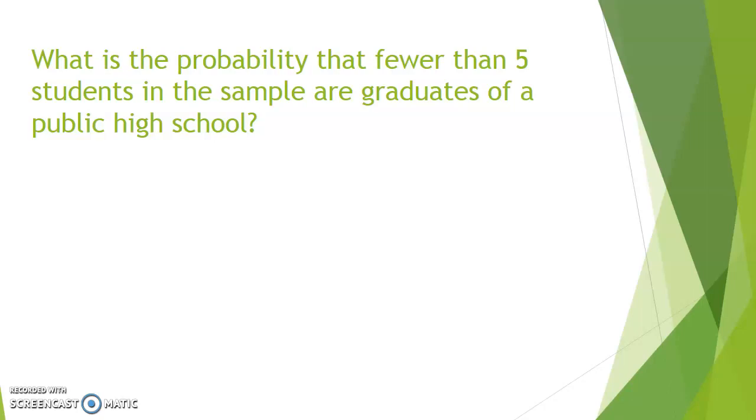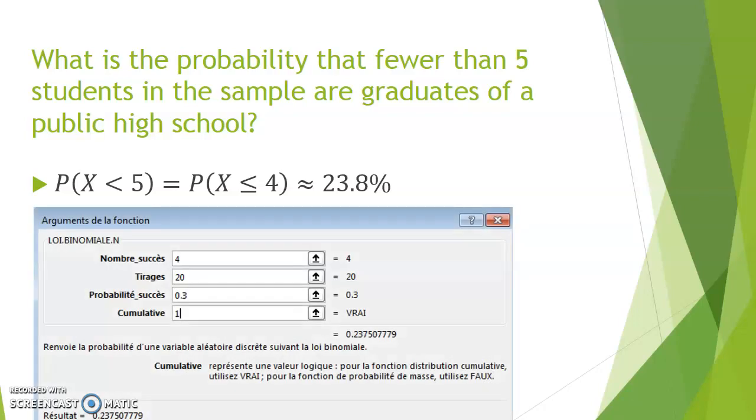If the probability that we are interested in finding is to have fewer than five students in the sample that come from public high schools, then we actually have to be careful to calculate the probability of having four or less. So that would mean we would calculate the formula for the probability for values X equals zero, one, two, three, and four. Again, we could also use Excel, and this time by putting a one in the cumulative window, we could accumulate the probabilities from zero all the way to four rather than finding the probability for four specifically.